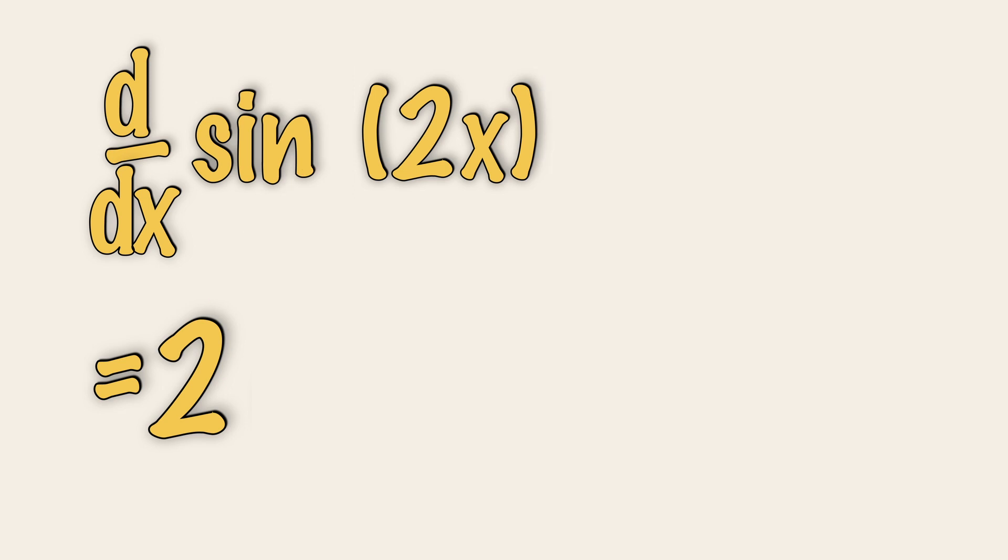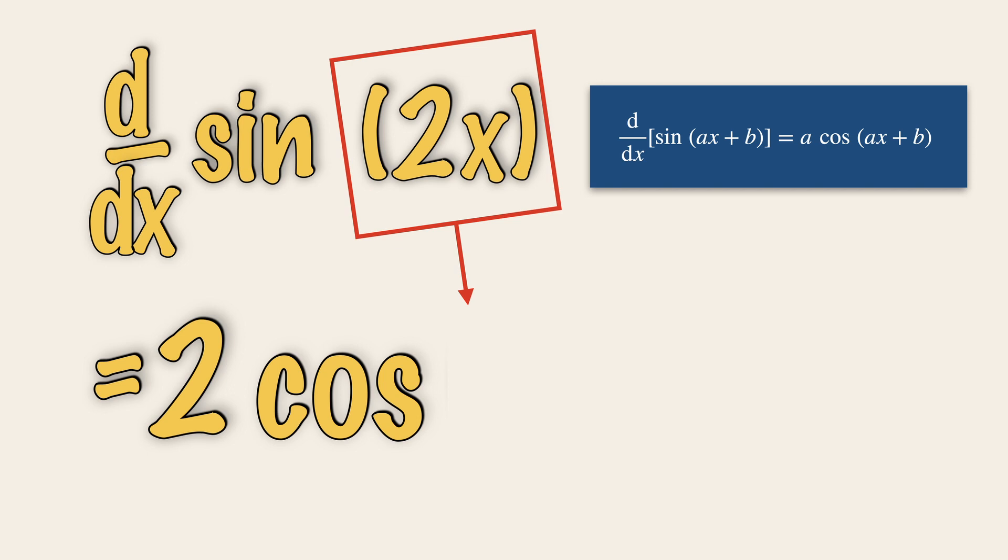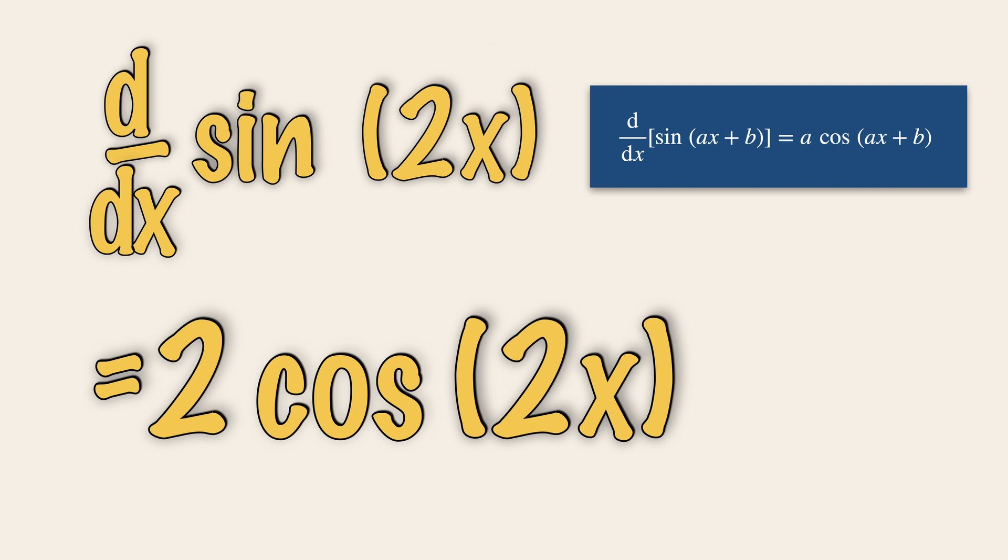Next, change the trigonometric ratio from a sine to a cosine. If you differentiate sine, it always gives you a cosine. Finally, keep the angle, don't ever change it. Copy the original down as it is. And so there you have it. The derivative of sine 2x is basically 2 cosine 2x.